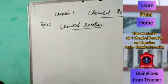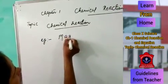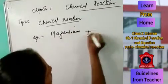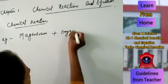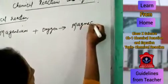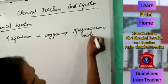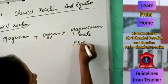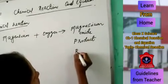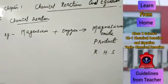Chemical reaction is a process in which substances combine to form new substances. Here you can see one example: magnesium combines with oxygen to form magnesium oxide. Magnesium oxide is the new substance formed, which is known as products. The product is placed on the right hand side — RHS — of the chemical equation.